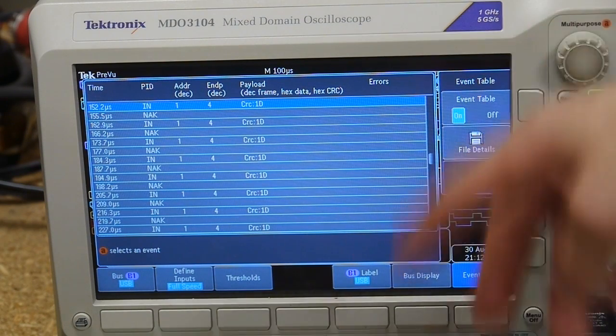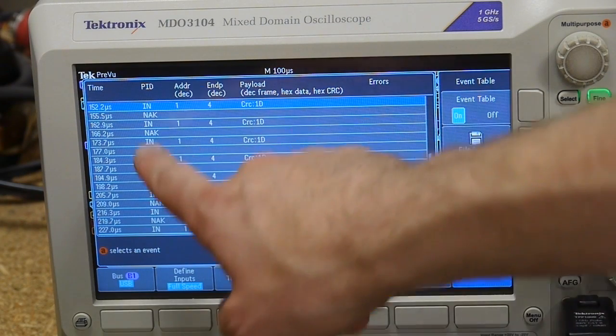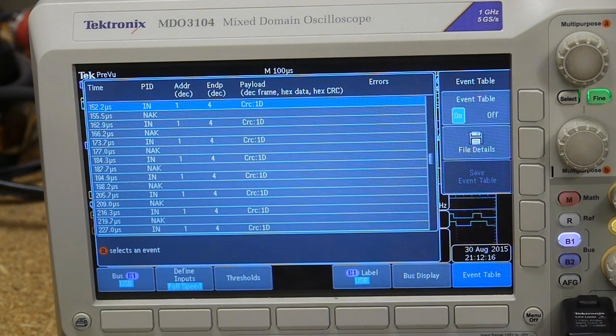In this case, since the host is pulling in the data as quickly as possible, it keeps sending requests to the microcontroller saying, you know, do you have any data? And all of these NAKs are the microcontroller responding, no, my buffer is not full and I don't have any data to send.